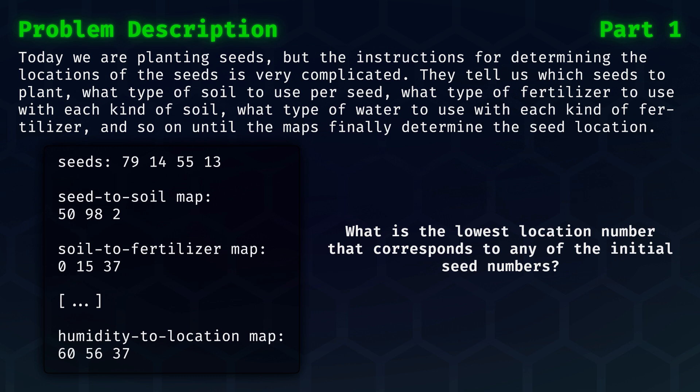See an example of the input on the left. We are provided four seeds, and then there is a map from seeds to soil, a map from soil to fertilizer, and eventually a map from humidity to location. Given the instructions, what is the lowest location number that corresponds to any of the initial seed numbers?